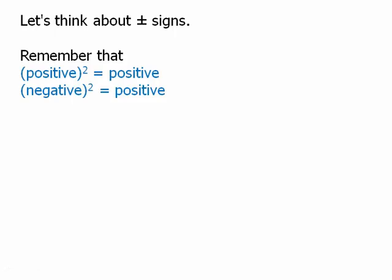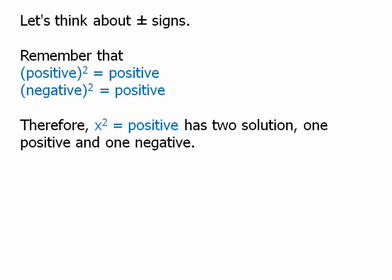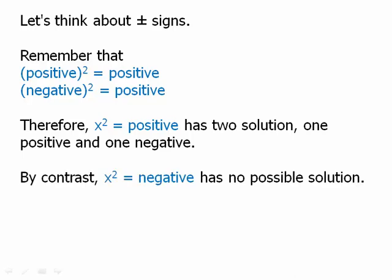We also have to think about positive and negative, because positive and negative numbers get kind of tricky here. Remember that with squaring, a positive squared is positive, and a negative squared is also positive. Therefore, if we have x squared equals a positive, that has two solutions — one positive and one negative. For example, x squared equals 9 could be plus 3 or minus 3.